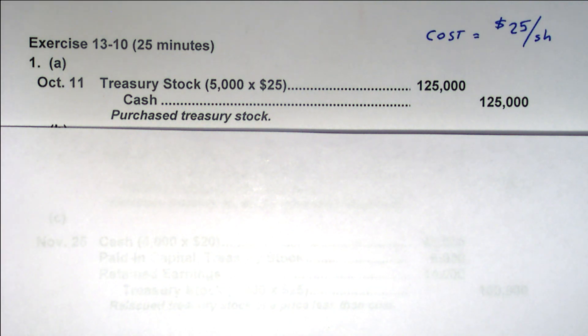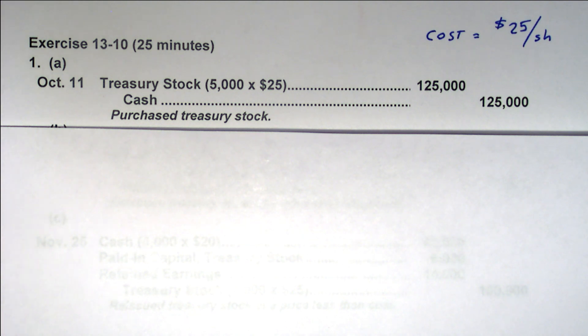What type of account is treasury stock? It's not an asset - it is a contra equity account. Treasury stock has a debit balance since most equity has a credit balance. Contra means opposite or on the other side of. So contra equity has a debit balance, and treasury stock is a debit balance account.